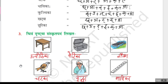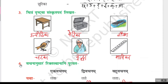Now the third question: Chittram drishtuwa Sanskrit padam likhata — on seeing the picture we have to write the Sanskrit words. First is table: Utpeetika. Next is box: Petika. Next is boat: Nauka. Next is a woman — old woman: Vriddha.